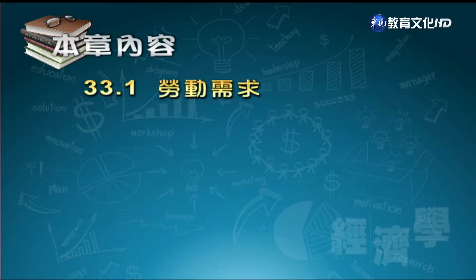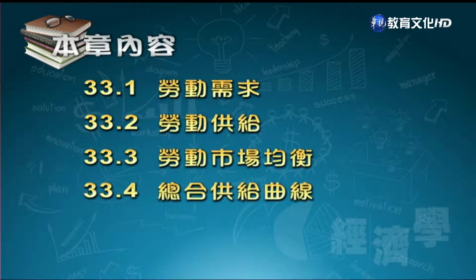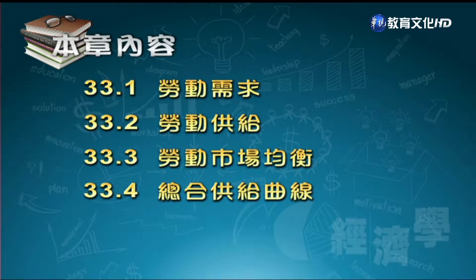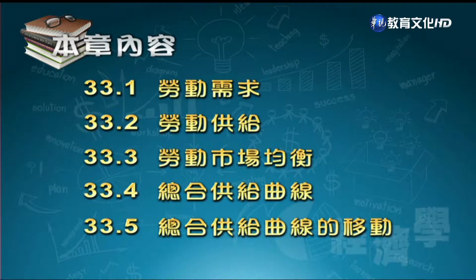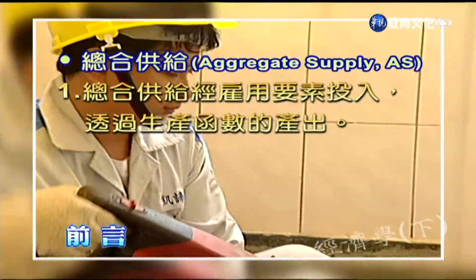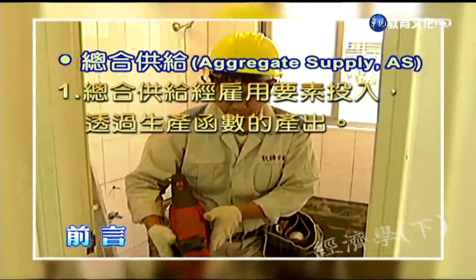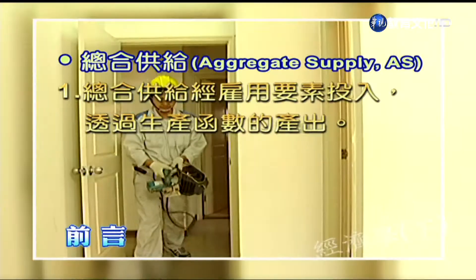我们这个讲次大概安排以下内容：第一是劳动需求，第二谈劳动供给，再来谈劳动市场均衡，接下来谈劳动市场均衡与总和供给曲线的关系，最后讨论总和供给曲线的移动。